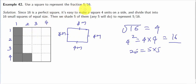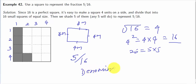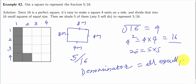So we have a fraction of 5 divided by 16, that is 5 over 16. We have a denominator. The denominator indicates all equal parts.